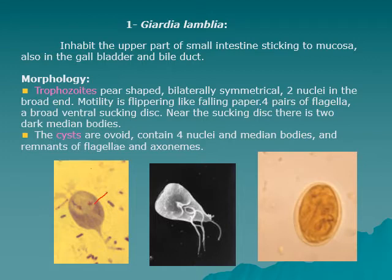The two nuclei give this part a gleaming appearance. The sucking disc is located on the ventral side of the cell and occupies a good portion of it. There is also a tapering posterior part behind the sucking disc.